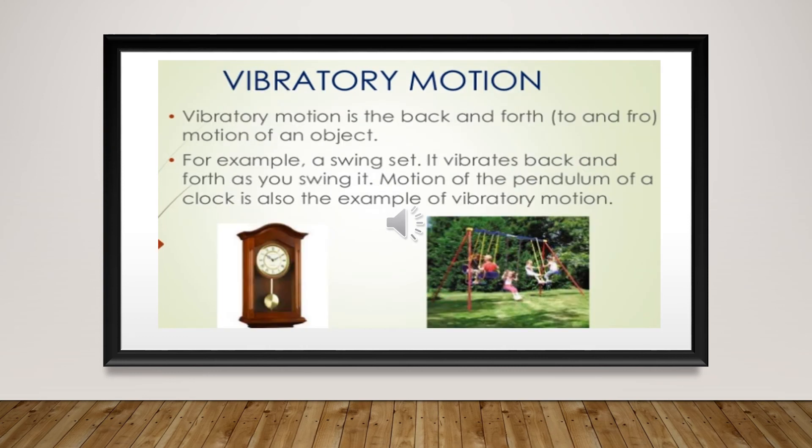Now let's come to the third type of motion: vibratory motion. Vibratory motion is a back and forth, that is to-and-fro, motion of an object. An example is a swing set — it vibrates back and forth as you swing it. The motion of the pendulum of a clock is also an example of vibratory motion.